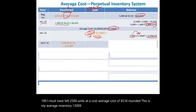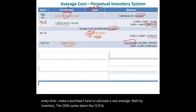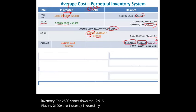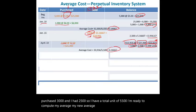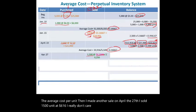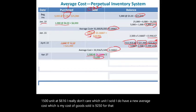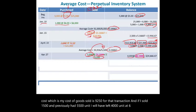On April 22nd, I purchased 3,000 units at $7. Every time I make a purchase, I compute a new average. Prior inventory of $12,916 plus new purchase of $21,000 equals $33,916 total invested. With 2,500 prior units plus 3,000 new units = 5,500 units, the new average cost is $6.16. On April 27th I sold 1,500 units at $6.16, with cost of goods sold of $9,250.